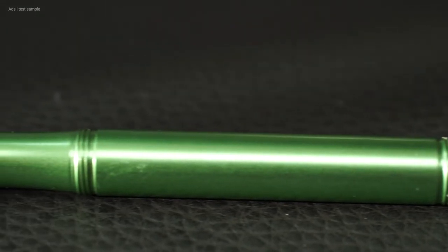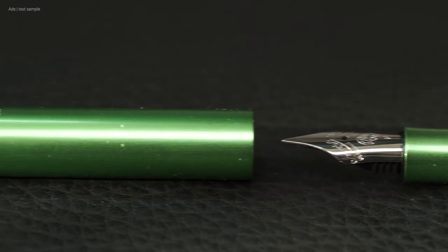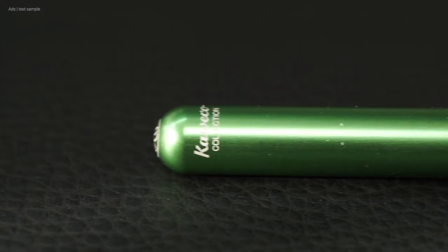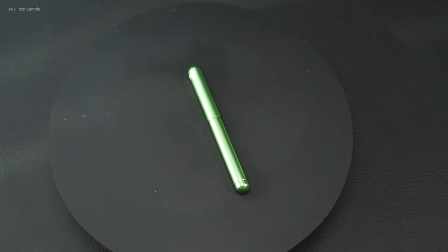Especially in this version of the Kaweco Collection, it is an eye-catcher. Small, a green metallic exterior. It is small, but it still writes well. It is available in various colors and metal versions. And it is available in the nib widths, extra fine to extra broad.